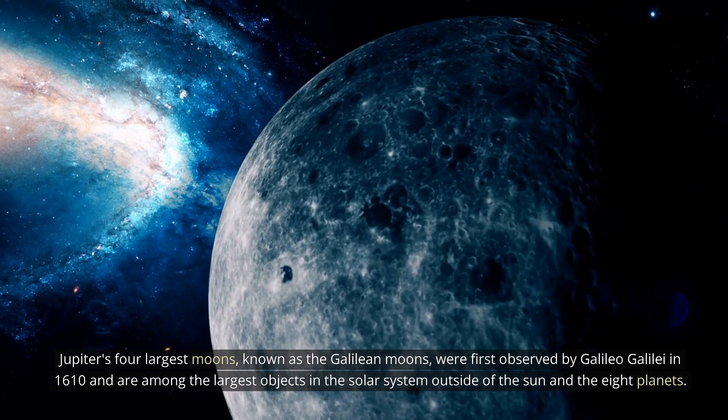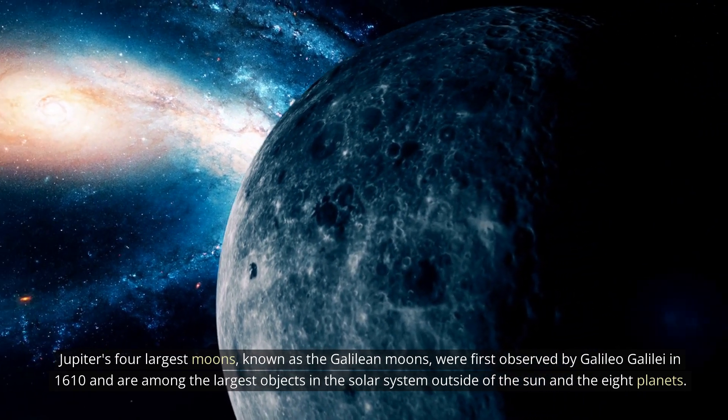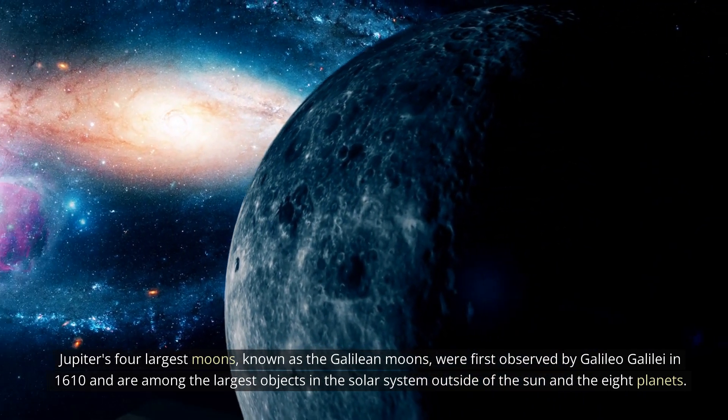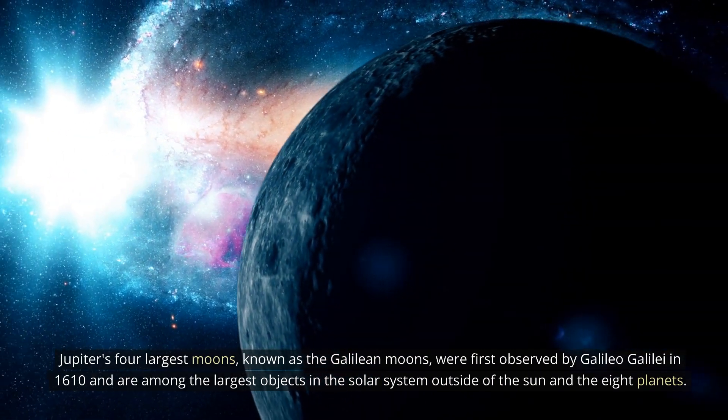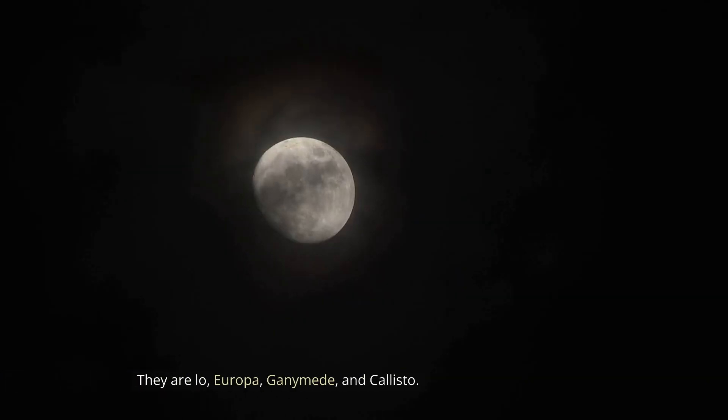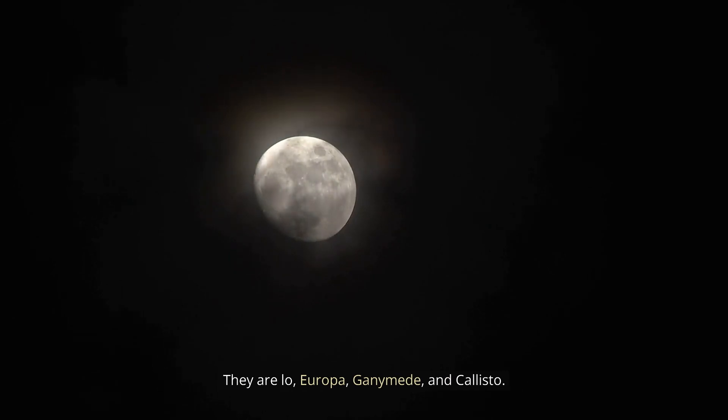Jupiter's four largest moons, known as the Galilean moons, were first observed by Galileo Galilei in 1610 and are among the largest objects in the solar system outside of the Sun and the eight planets. They are Io, Europa, Ganymede, and Callisto.